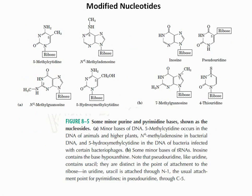There are some purines and pyrimidines that exist as nucleosides. Minor bases in DNA include 5-methylcytidine, which occurs in the DNA of plants and animals, N6-methyladenosine in bacterial DNA, and 5-hydroxymethylcytidine in the DNA of bacteria infected with bacteriophages. There are also minor bases in tRNA, such as inosine, pseudouridine, and 7-methylguanosine, which have roles in enzyme function.